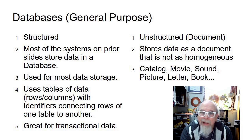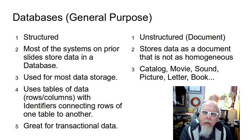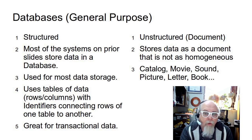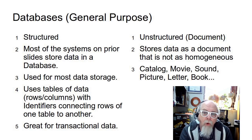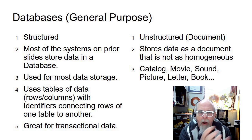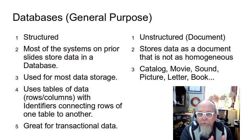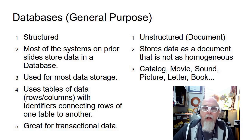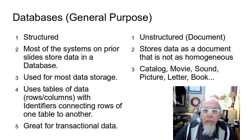There's another type of database known as an unstructured database, also called a document-type database. In a document database, we store a document that contains lots of stuff — not necessarily rows and columns or keys and tuples — but more like full documents. A catalog entry, a movie, a sound, a picture, a letter, a book — those kinds of things don't fit well into the structured model of rows and columns, so we use an unstructured or NoSQL database to store them. There are different kinds of databases for different needs.